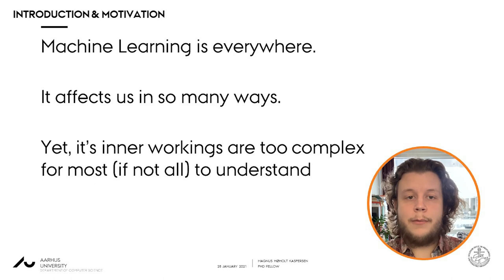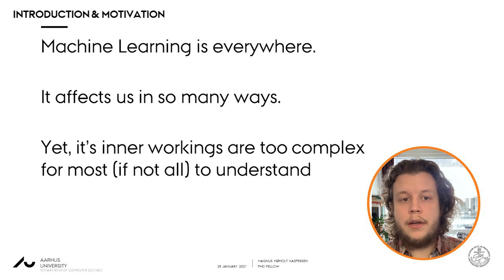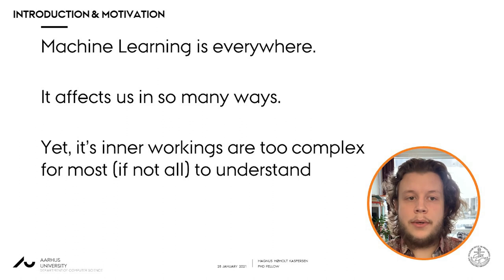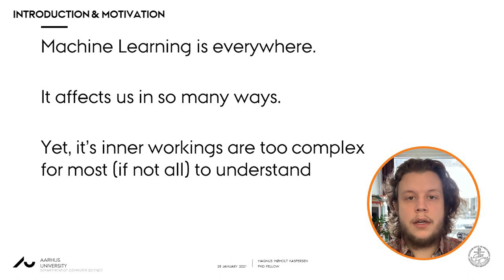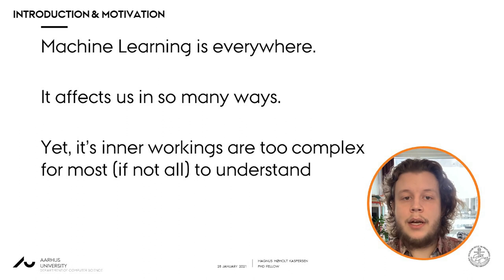Our motivation for this work comes from the widespread use of machine learning in society. It's everywhere and affects us in several ways, from recommendation algorithms on Facebook and Google to machine learning systems supporting decision making in law enforcement and the judicial system. Because machine learning is able to connect information in datasets too large for human comprehension, the inner workings of these systems are too complex for most if not all of us to understand. Because of this potential to affect our daily lives, it's important for children and young people to understand machine learning and become able to take a critically informed stance about its use.